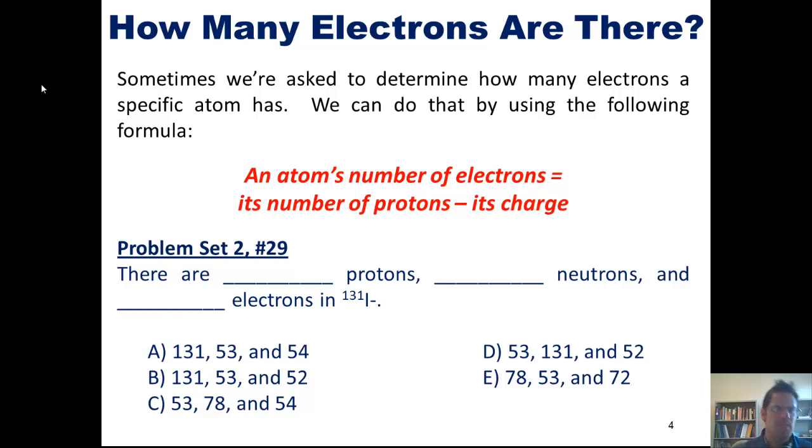Now, given the fact that it has a charge of negative 1 and its number of protons is equal to 53, you ask yourself how many electrons does it have? Well, we can use this equation. An atom's number of electrons equals its number of protons minus its charge. So if I take the number of protons, 53, and I minus a negative 1 from it, that's the same thing as taking 53 plus 1. So its number of electrons equals 54.